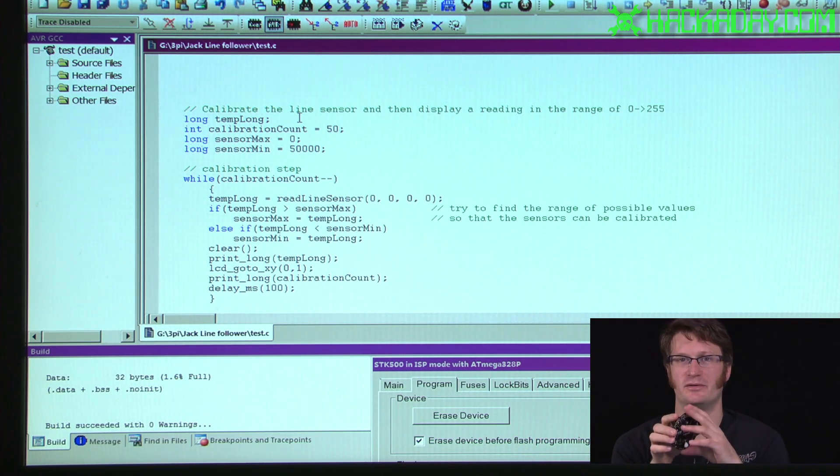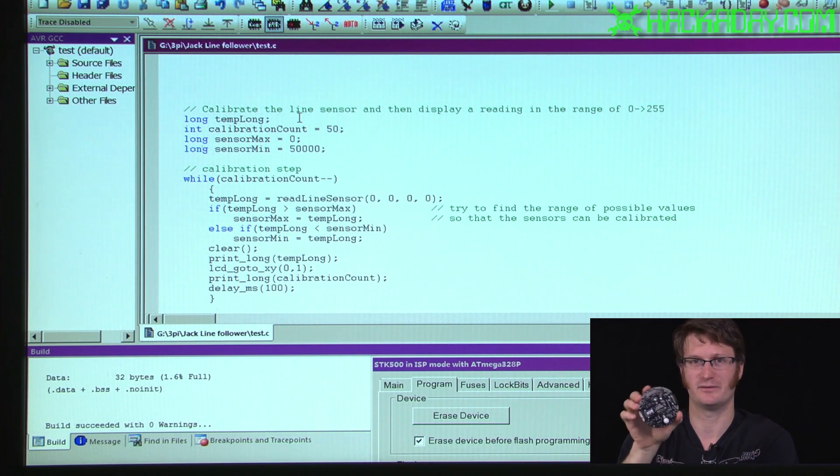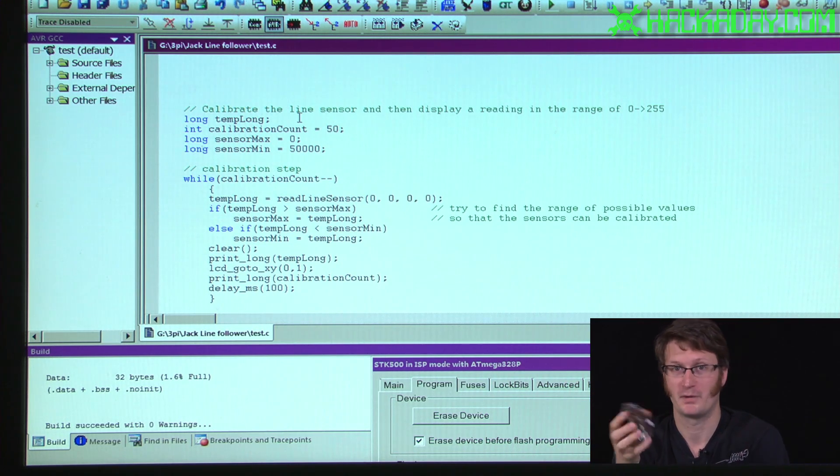The way that Pololu does it, which is really the way that you would do it in the end, but I didn't feel like doing it, is they have their robot rotate over it on its own. It's easy enough to do. I showed you how to do that in the pulse width modulation video.